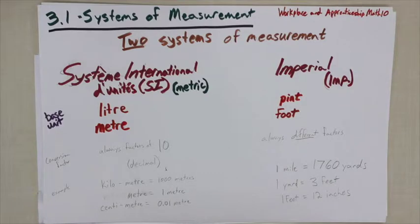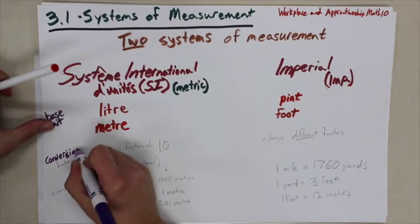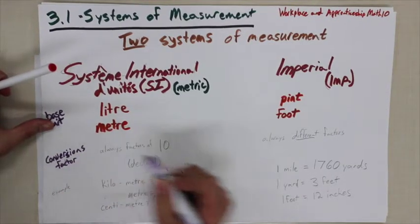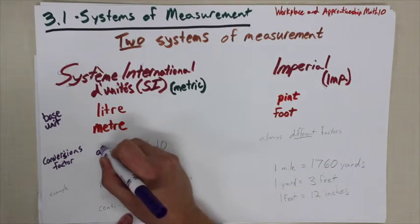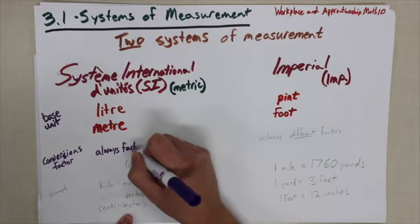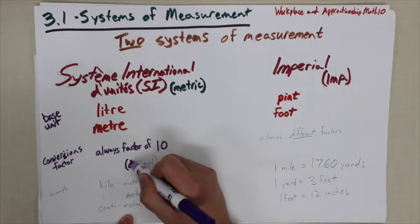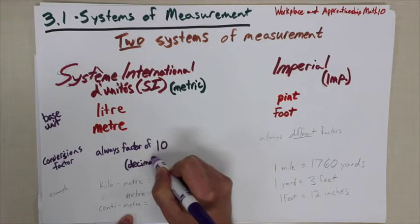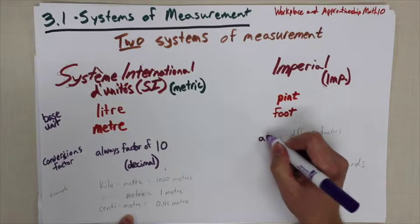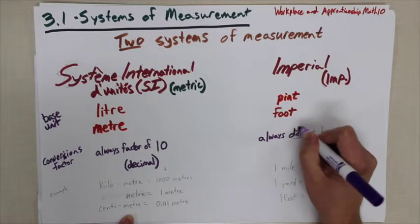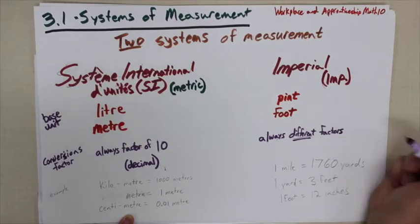One important difference about the base units is that they behave differently in each system. To convert one unit of measurement from another in the SI system, we always have a factor of 10 — so we're always multiplying or dividing by some multiple of 10, meaning everything in SI is a decimal. In the imperial system, the conversion factors are always different — sometimes multiplying or dividing by 3, sometimes by 12, sometimes even by 1760.